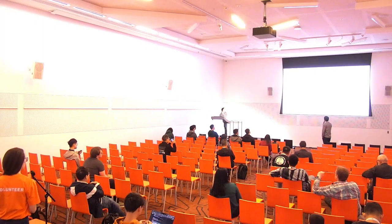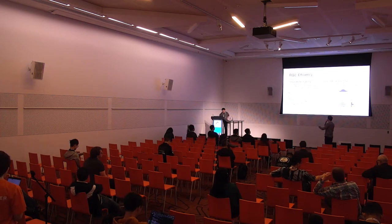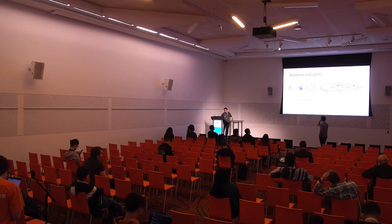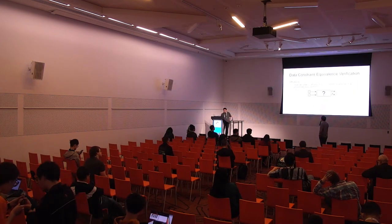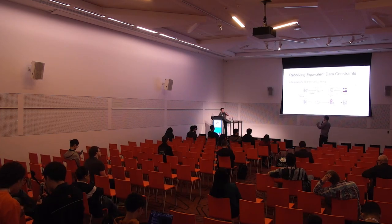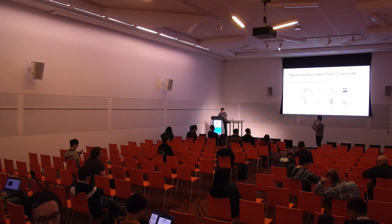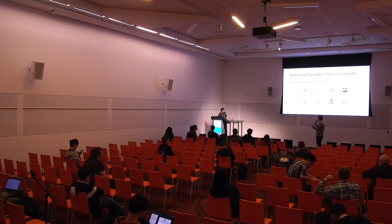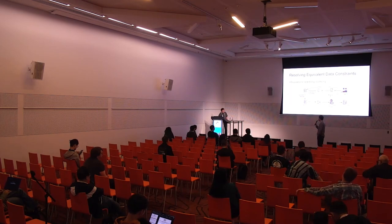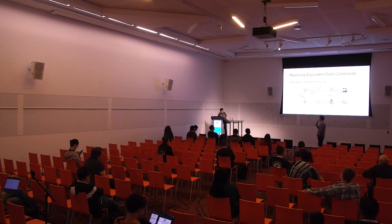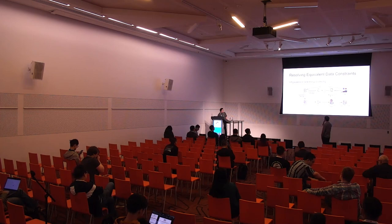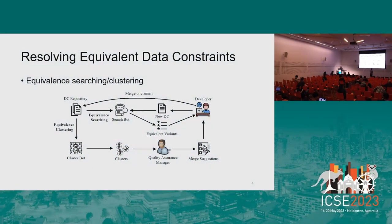Audience question: As you mentioned, there are tens of thousands of constraints that need equivalence checking. Does that mean when a new constraint enters the system, it needs to be checked against all existing tens of thousands of constraints? Response: Yes, that is one usage scenario of our decision procedure, related to the equivalent searching process. When we want to submit a new data constraint to the repository, we want to know whether it is equivalent to some existing ones. Otherwise, we can choose to merge it with the existing equivalent variants.